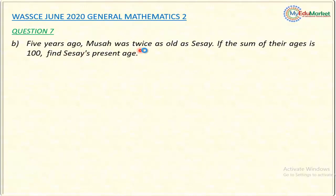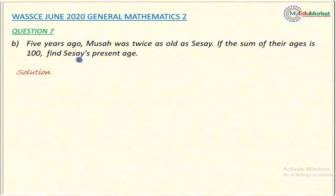Five years ago, Musa was twice as old as Cissi. If the sum of their ages is 100, the question asks us to find Cissi's present age. Going back to the question: five years ago is the time that Musa was twice as old as Cissi, but the present ages of Musa and Cissi add up to 100. The question is requesting us to find Cissi's present age.